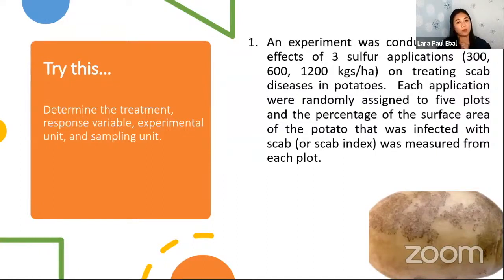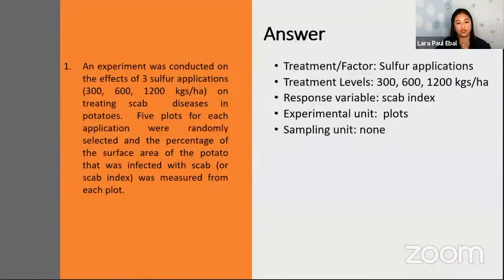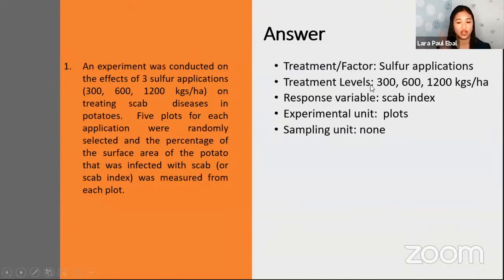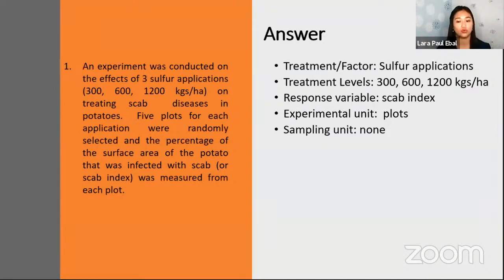To summarize: the treatment is sulfur application, with treatment levels 300, 600, and 1,200. The response variable is scab index (the percentage). The experimental unit is the plots, since that is where you applied the treatment. There is no sampling unit in this experiment.